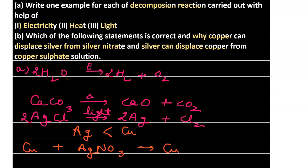The reaction is: copper reacts with silver nitrate (AgNO3) to form copper nitrate and silver. Silver gets displaced. The second statement - that silver can displace copper from copper sulfate - is wrong, because silver is less reactive than copper. So copper displaces silver from silver nitrate, not the other way around.